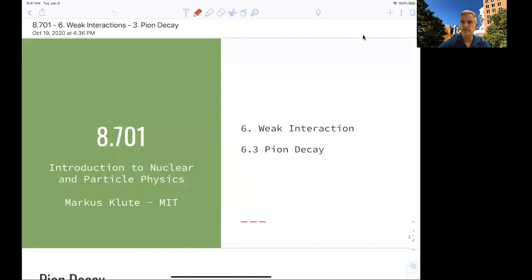Welcome back to 8.701. So now, after we introduced the weak interaction and the Feynman rules for weak interaction, we can now look at decays of mesons, and in this case, the decay of a pion.